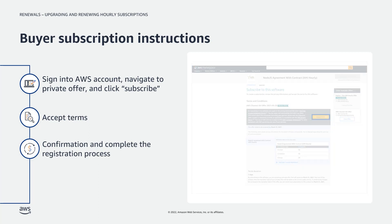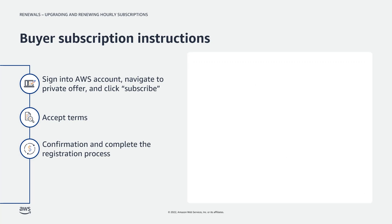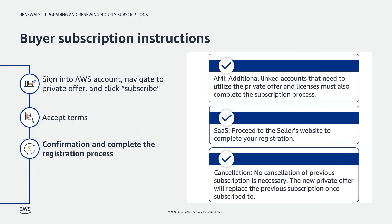If subscribing to an AMI hourly product, any additional linked accounts that need to utilize the private offer must also complete the subscription process. If subscribing to a SaaS product, the customer will proceed to the seller's website to complete registration after finalizing the subscription in AWS Marketplace.